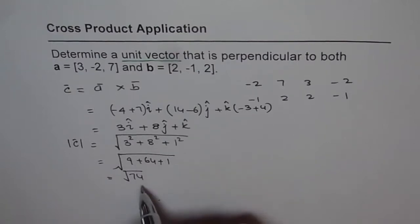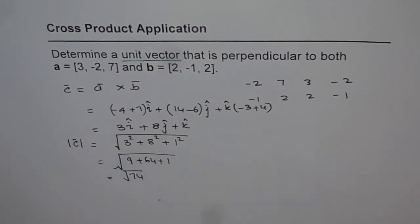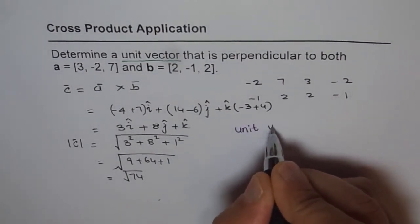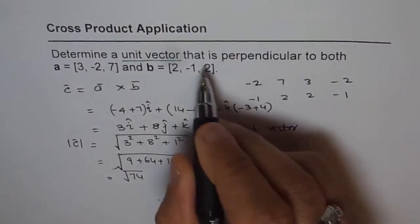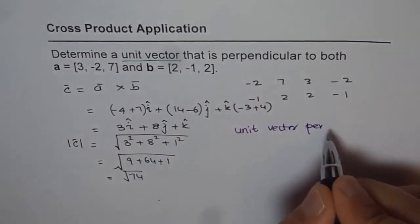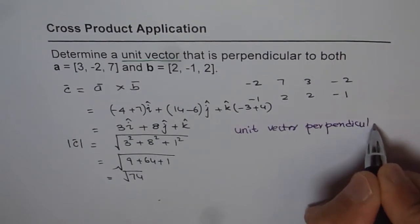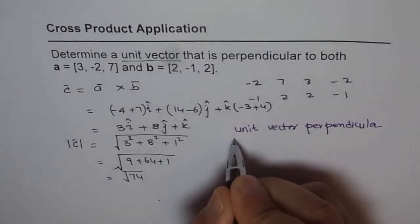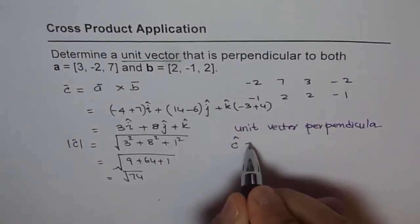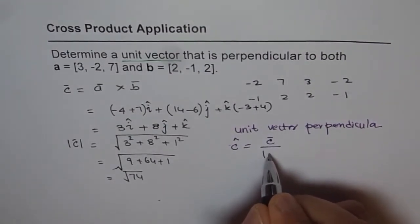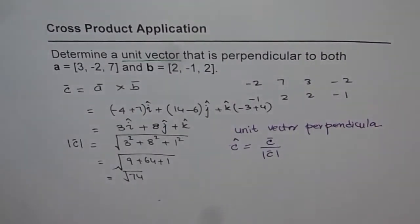Now, 74 square root. So the unit vector is therefore equals to, so let's write down here. This is our answer. Unit vector. Perpendicular. Perpendicular unit vector. So normally I write perpendicular unit vector like this, it means perpendicular unit vector, it is the vector C divided by the absolute value of C which we calculated here.